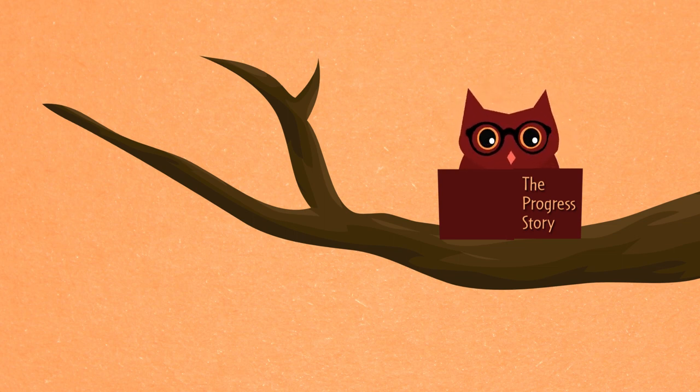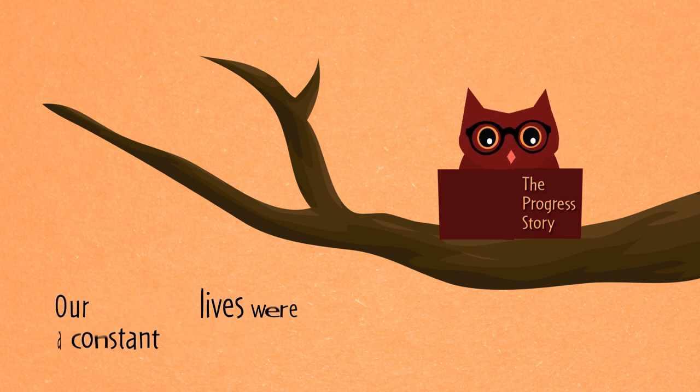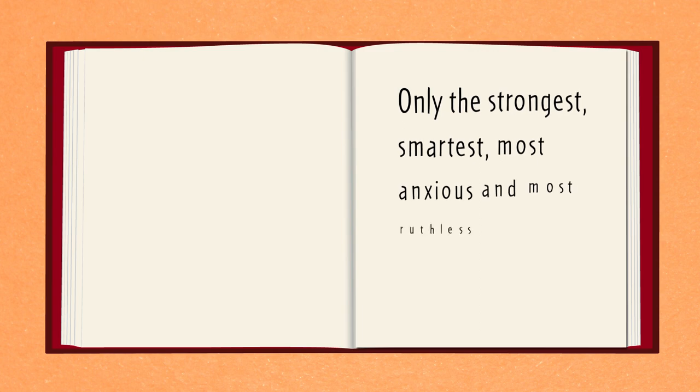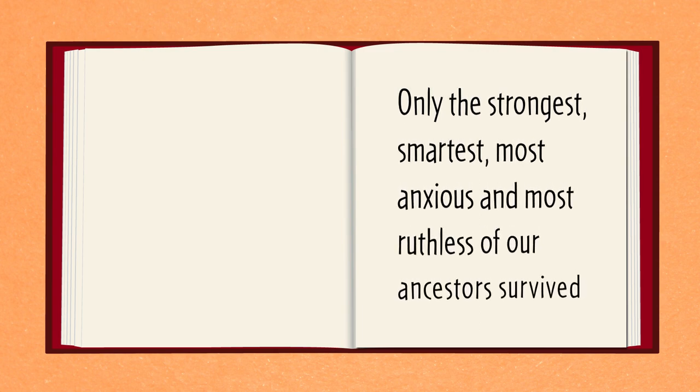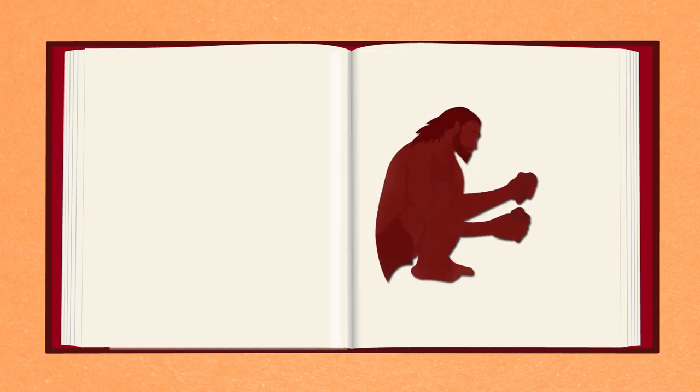The current story we are told is, our ancestors' lives were a constant struggle. They struggled against starvation, diseases, predators and most importantly, each other. Only the strongest, smartest, most anxious and most ruthless of our ancestors survived to pass on their genes. And even these lucky ones lived only to the age of 35 or so.